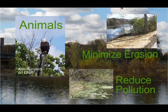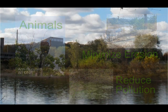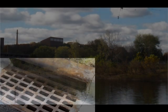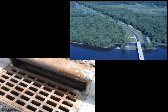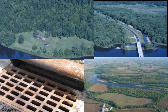Riparian buffers are most important in areas where surface water runoff is likely to carry pollutants into the river. Such areas include city streets, highways, agricultural areas, and privately owned waterfront property.